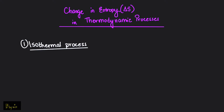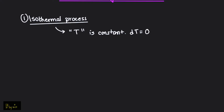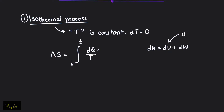We know that in an isothermal process, the temperature is constant. So dT, which is the change of temperature, is 0. For the total change of entropy, delta S is basically the integral of dQ over T, from the initial to final state. And dQ is the change of heat energy. From the first law of thermodynamics, dQ is equal to du plus dW, where du is the change of internal energy. The change of internal energy in an isothermal process is basically 0 because the change of temperature is 0.